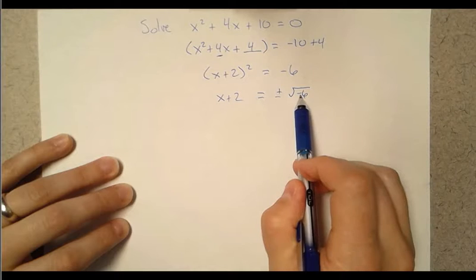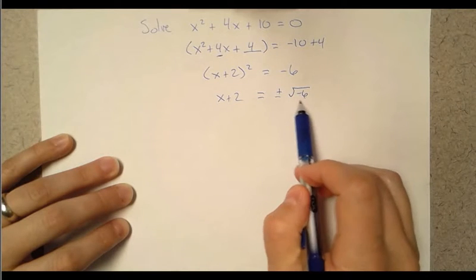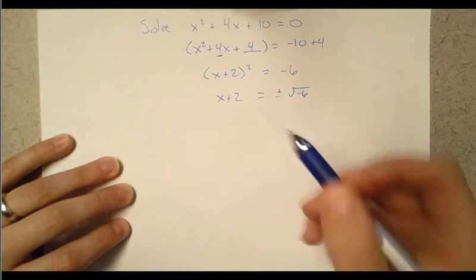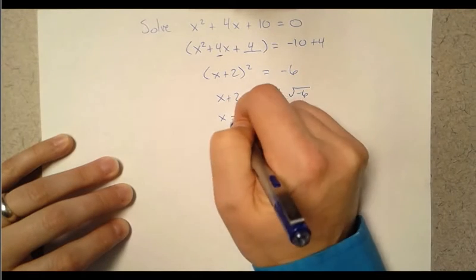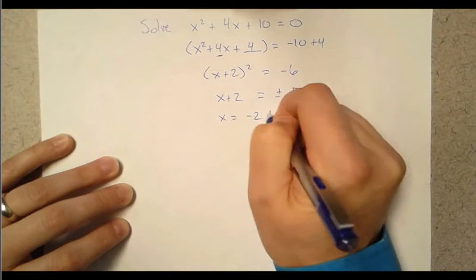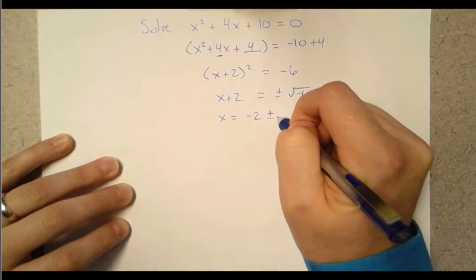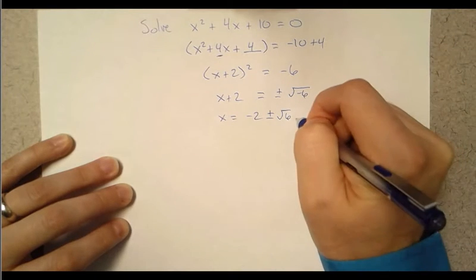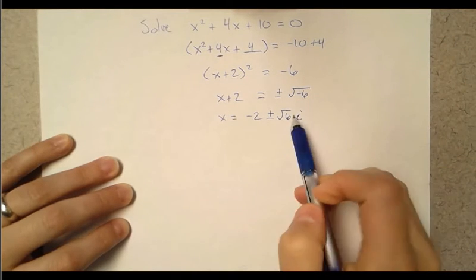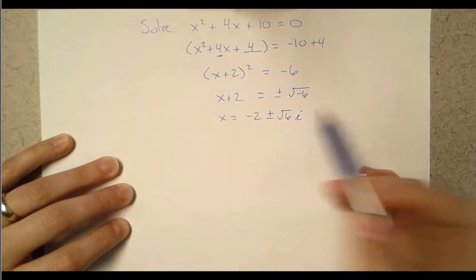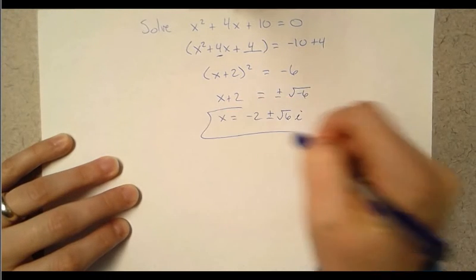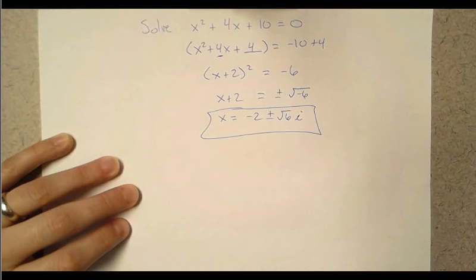Now this negative under the radical means we have imaginary solutions. Square root of 6 won't simplify down. So x equals, let's subtract that 2 over, plus or minus square root of 6 times i. Basically that negative under the radical we can just pull out and write it as an i. And there are our two solutions.